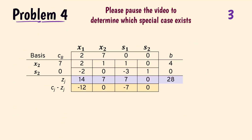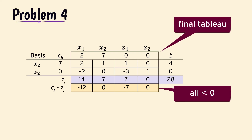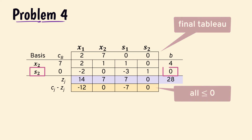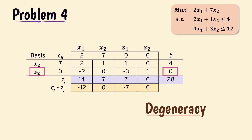Problem 4. Here we have the final tableau and a basic variable s2 equals 0. Therefore, this is degeneracy. The result here is the next iteration of the tableau we found in problem 2.